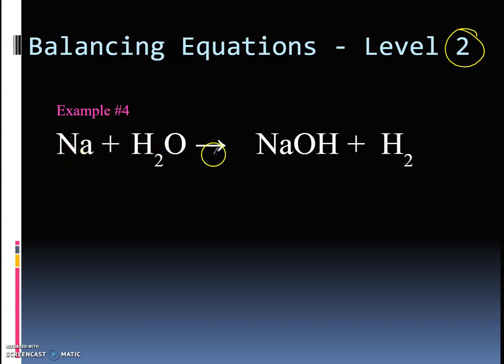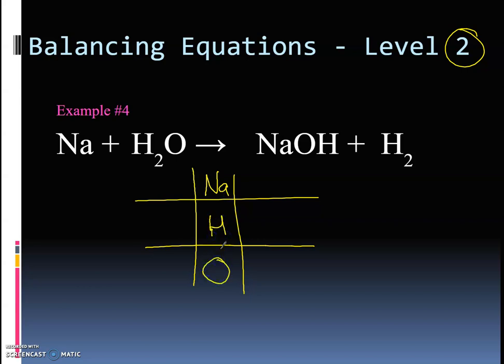Alright, so we have Na plus H2O gives us NaOH plus H2. Under the yield sign, I'm going to draw my tally for my different elements. So I have Na, I have H, and I have O. On the left side I have one Na, I have two H's and one O. On the right hand side, I have one Na, I have one O, and be careful, I have H in two spots. So I have H plus H2, so that means I have three total H's on the right hand side.